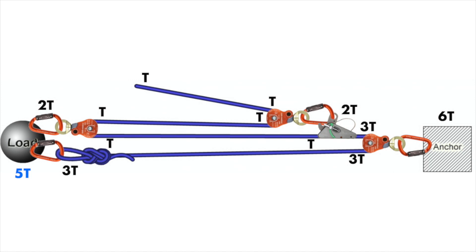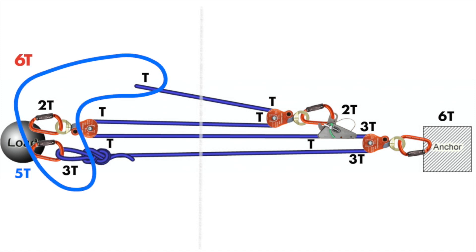Once again, we'll check our results by drawing a line down the middle of the system. The tensions leaving our system on the left are the haul line, pulley, and figure of 8, for a total of 6T. On the right, tension only leaves our system at the anchor, which we've already said is 6T. With 6T on both sides of the system, we can be reasonably confident our calculations are correct.